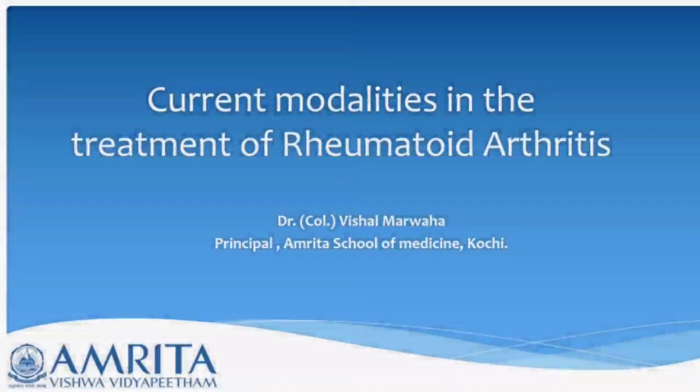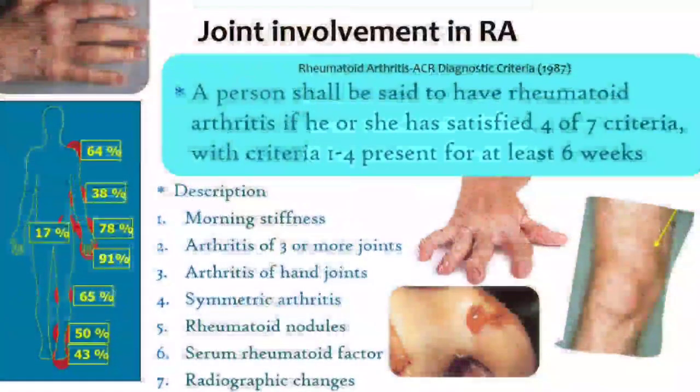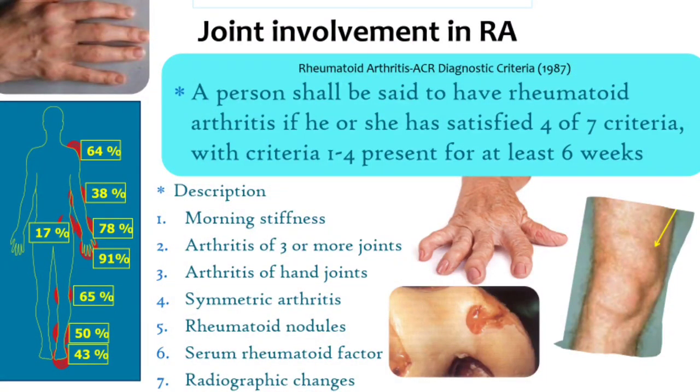Good day to everyone. I'll be speaking on current modalities in the treatment of rheumatoid arthritis. Rheumatoid arthritis, as we know, is a polyarticular disease primarily causing arthritis affecting hand joints, foot joints, and other joints in the body. A person is said to have rheumatoid arthritis if they satisfy four of the seven criteria.